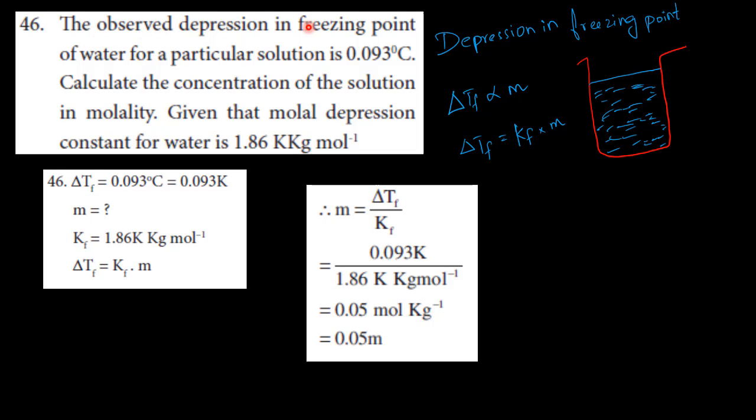The observed depression in freezing point of water for a particular solution is 0.093 degree Celsius. Calculate the concentration of the solution in molality given that molal depression constant for water is 1.86 Kelvin kg per mol.